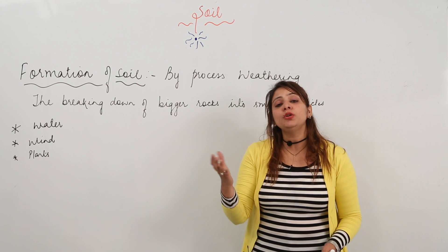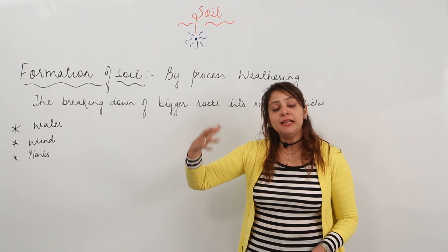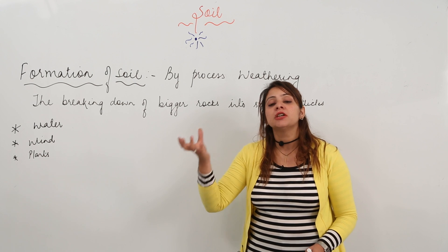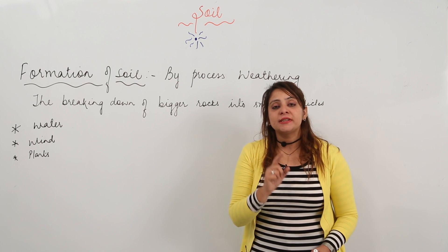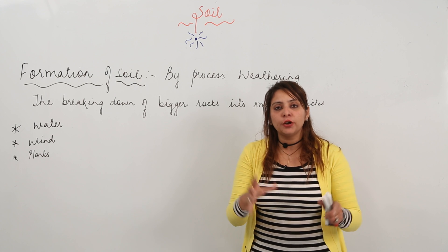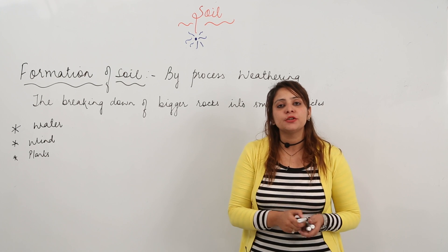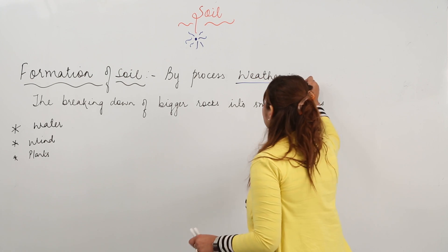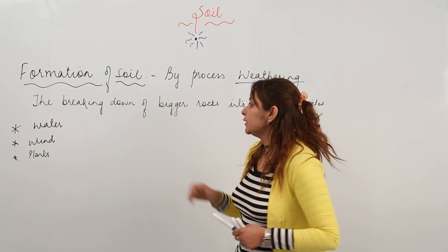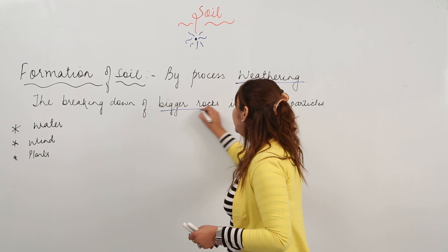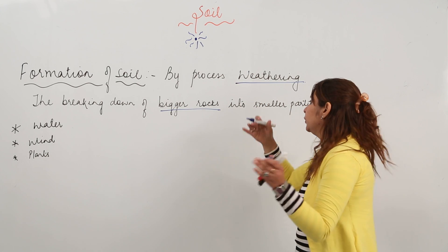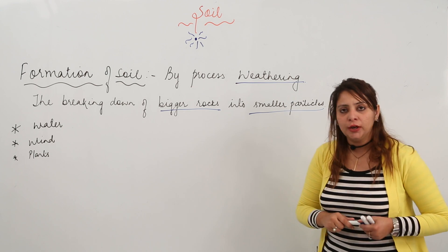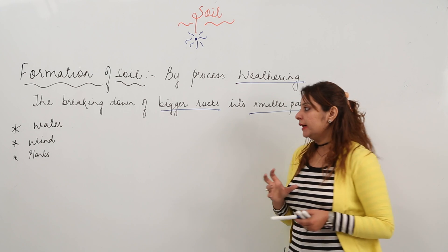Those rocks were still bigger, not as big as before, but still bigger. The process of how those bigger rocks transformed into soil — the process of breaking down of bigger rocky material into soil — is called weathering. So the formation of soil occurs by the process of weathering, which means breaking bigger rocks into smaller and smaller particles until they appear like soil.